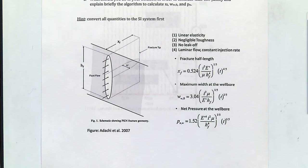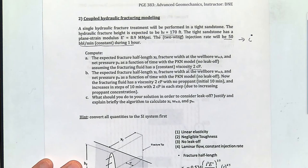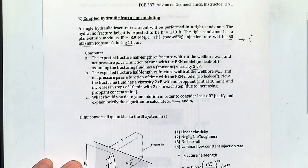It's a million — those are field units. So double capital M is a million. In this case, this is 8.9 times 10 to the 6 psi.